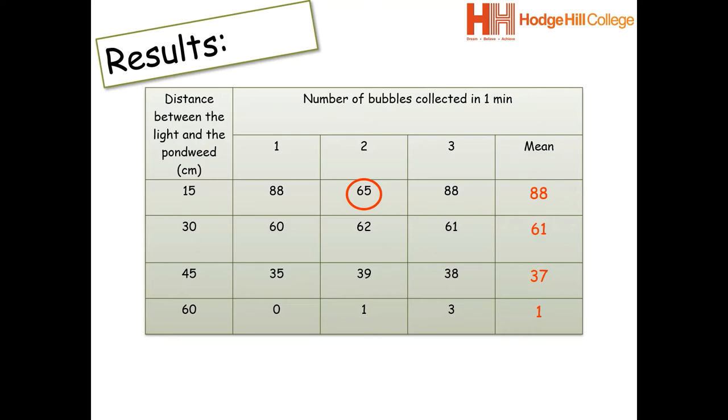So we circle it and we ignore it because it is an anomaly. So when we calculate our mean, we don't take that into account and we would simply add up 88 and 88 and then divide by 2 rather than 3 because we have ignored that middle result.